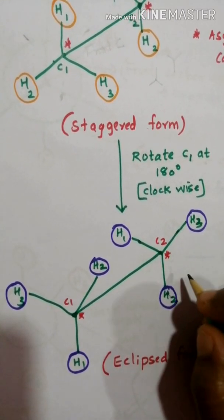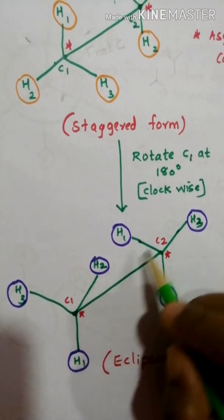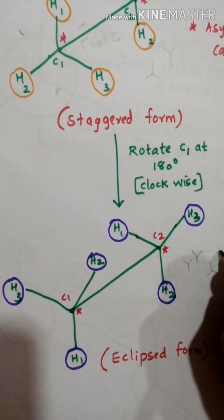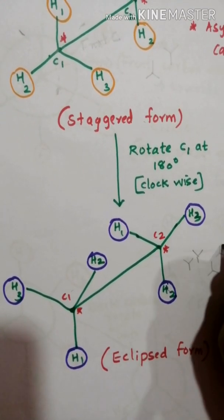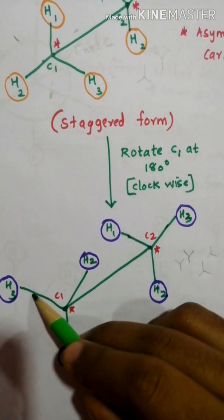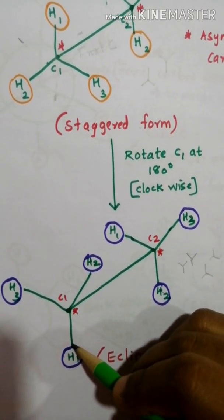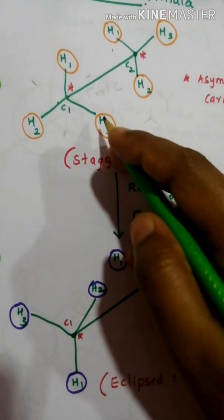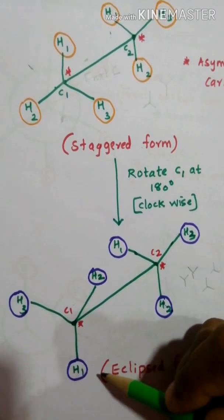How can you easily identify eclipsed form? You can identify by looking at the structure - you get two Y forms in the structure. Both groups are found to be in Y shape, or you can say both are in inverted Y. Look at the shape of these groups, then you can identify if it's staggered or eclipsed. These are two forms of Sawhorse: staggered and eclipsed form.